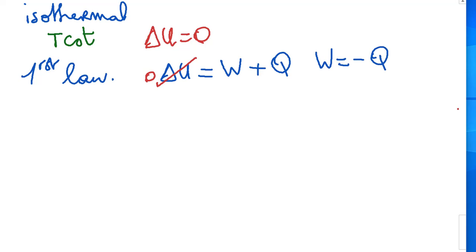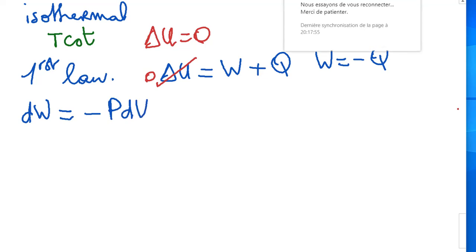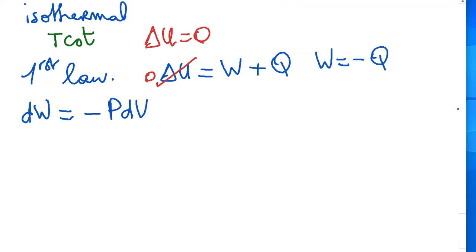So let's calculate the work. As you remember, the definition of the elementary work DW is minus P dV. This is the general definition of work in thermodynamics. To calculate the work in the specific case of isothermal transformation, we use this general formula and integrate: the work is the integral of minus P dV.